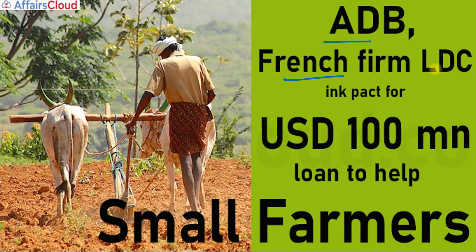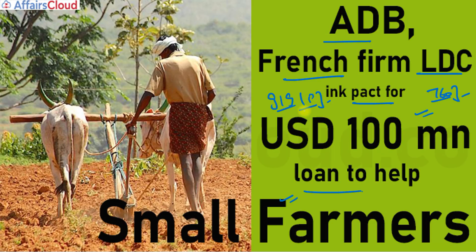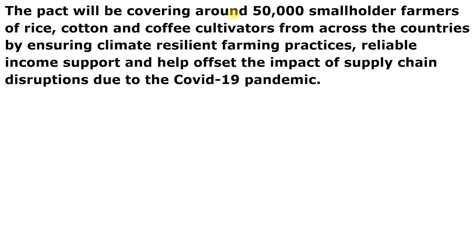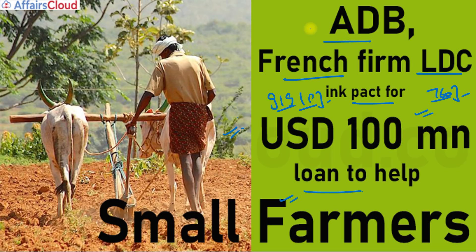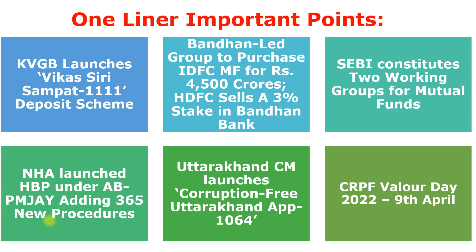The Asian Development Bank signed a USD 100 million loan pact with French firm LDC to help small farmers in countries such as India, Indonesia, Pakistan, Thailand, and Vietnam to recover from economic challenges posed by COVID-19 and improve resilience to climate change. The pact will cover around 50,000 small-holder farmers of rice, cotton, and coffee cultivators across these countries by ensuring climate-resilient farming practices, reliable income support, and help offsetting the impact of supply chain disruptions due to COVID-19.